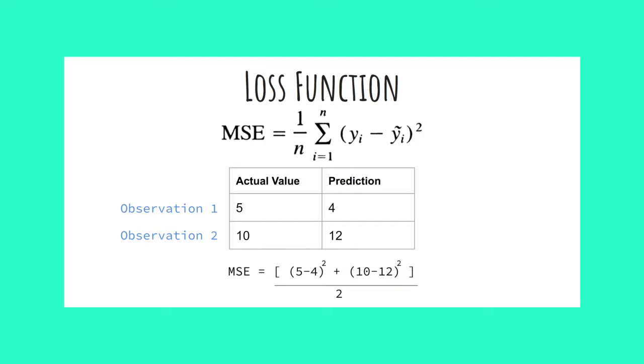Now I'll walk through an example of finding the mean squared error. In this slide, you can see a table with two observations, each containing a real value and its corresponding predicted value. We are simply going to subtract the two. Now you can see the full formula take shape at the bottom.